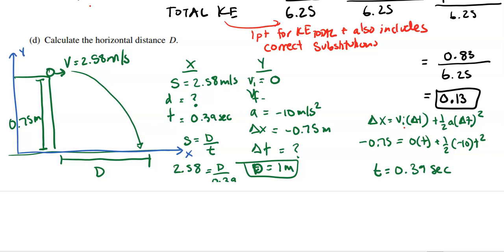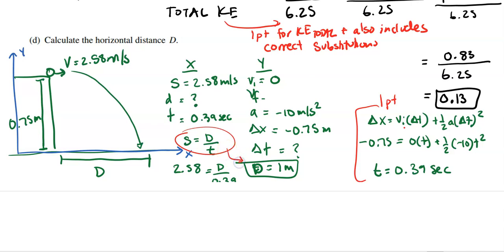For the AP scoring on part D: one point for using a correct constant acceleration equation in the y direction and calculating time as 0.39 seconds. Another point for using speed equals distance over time and getting 1 meter. This part is worth two points.